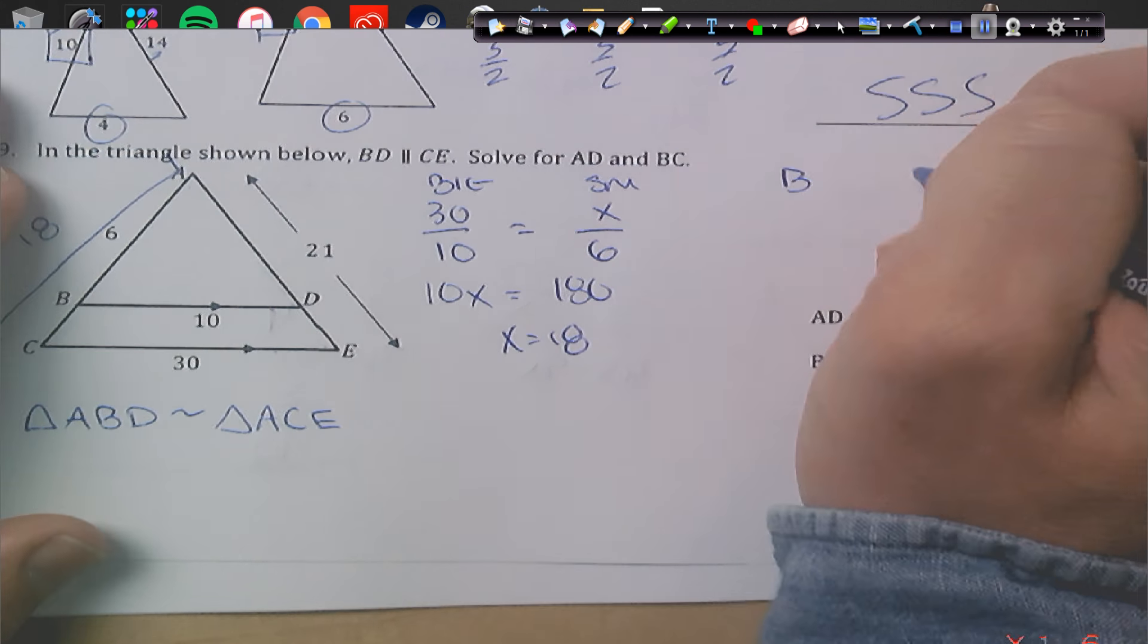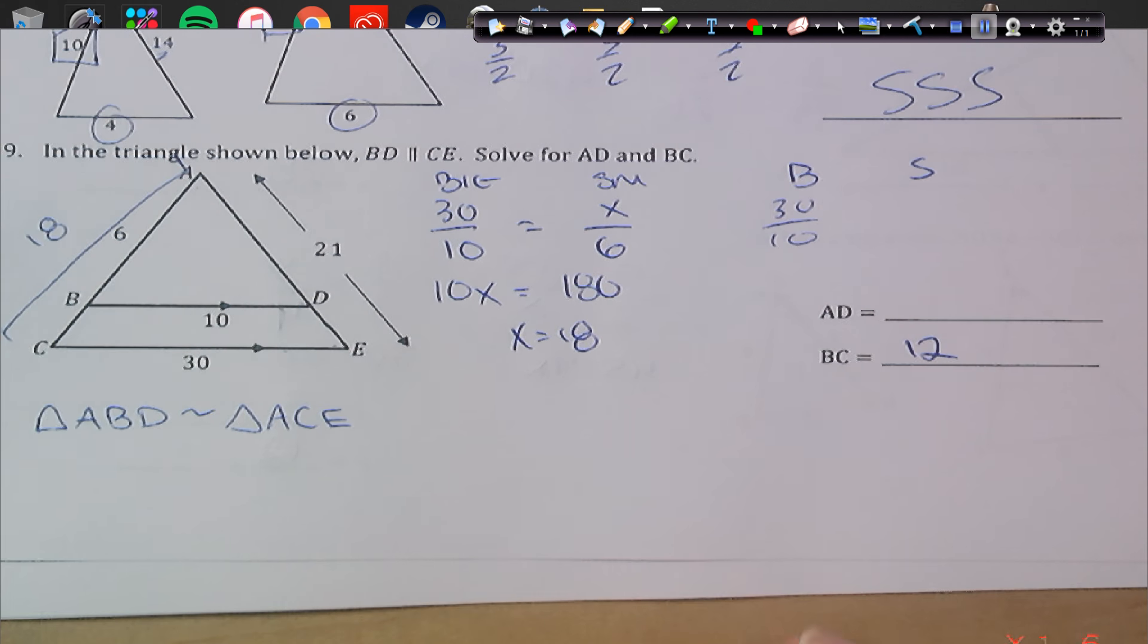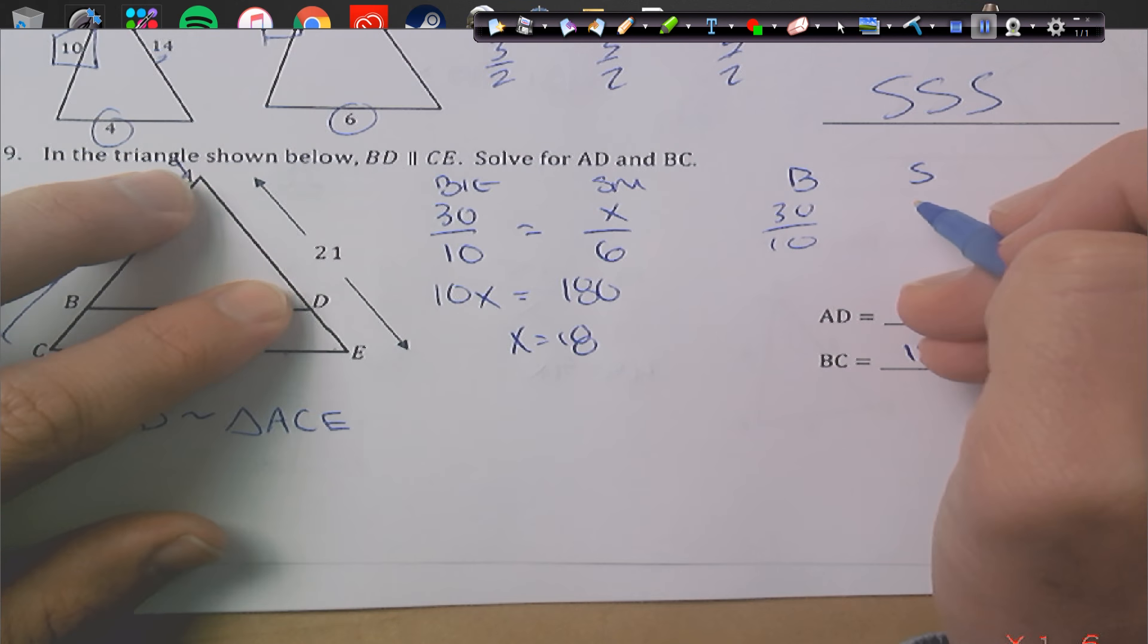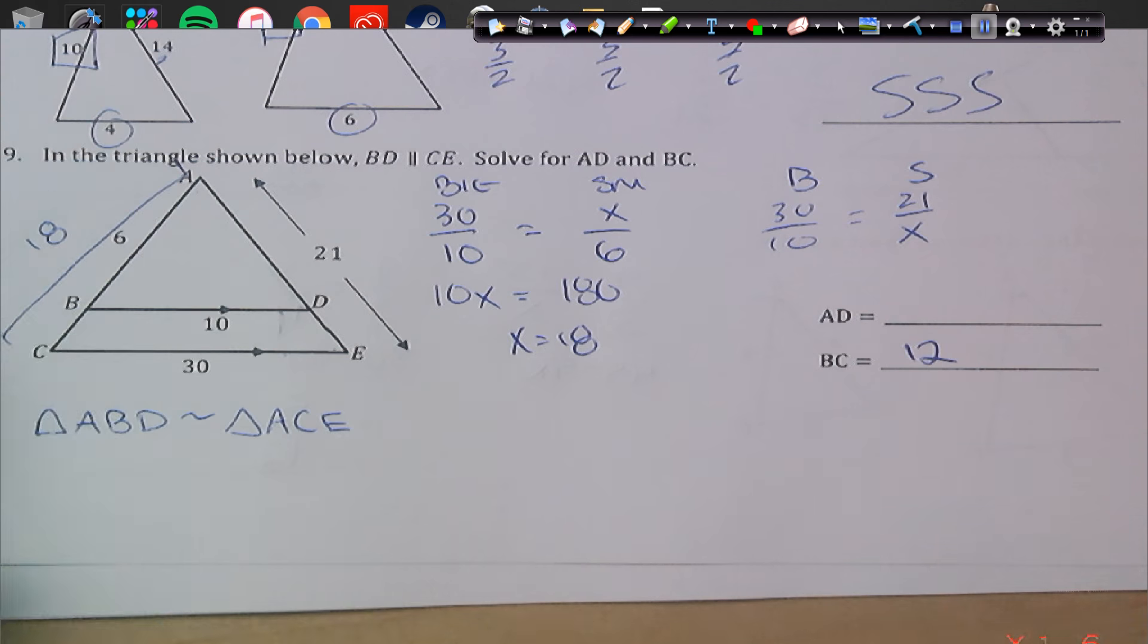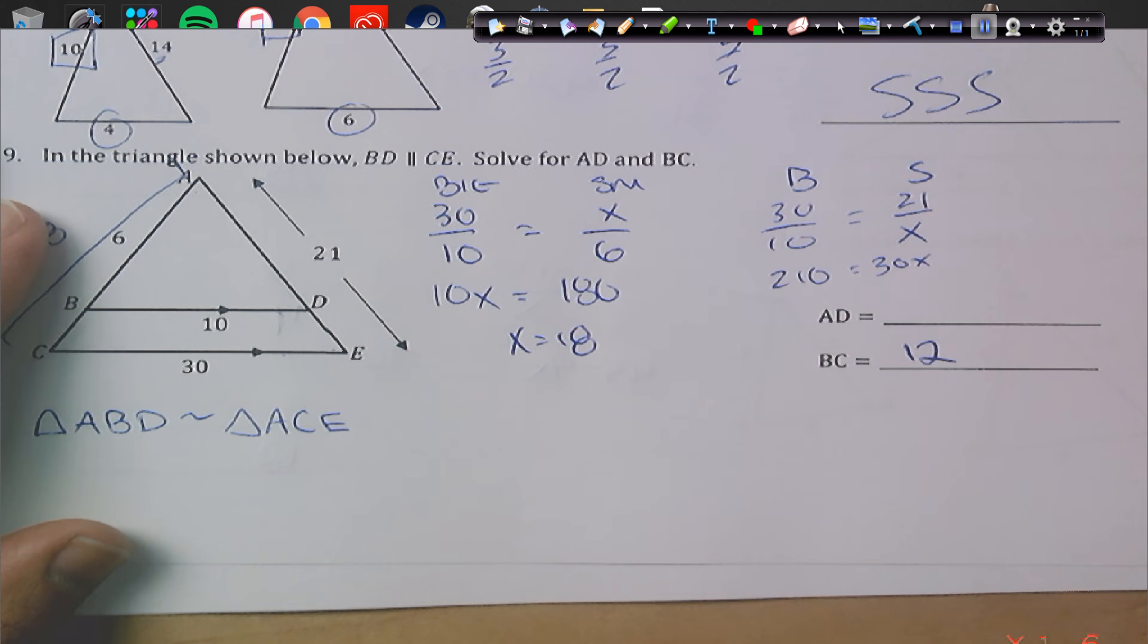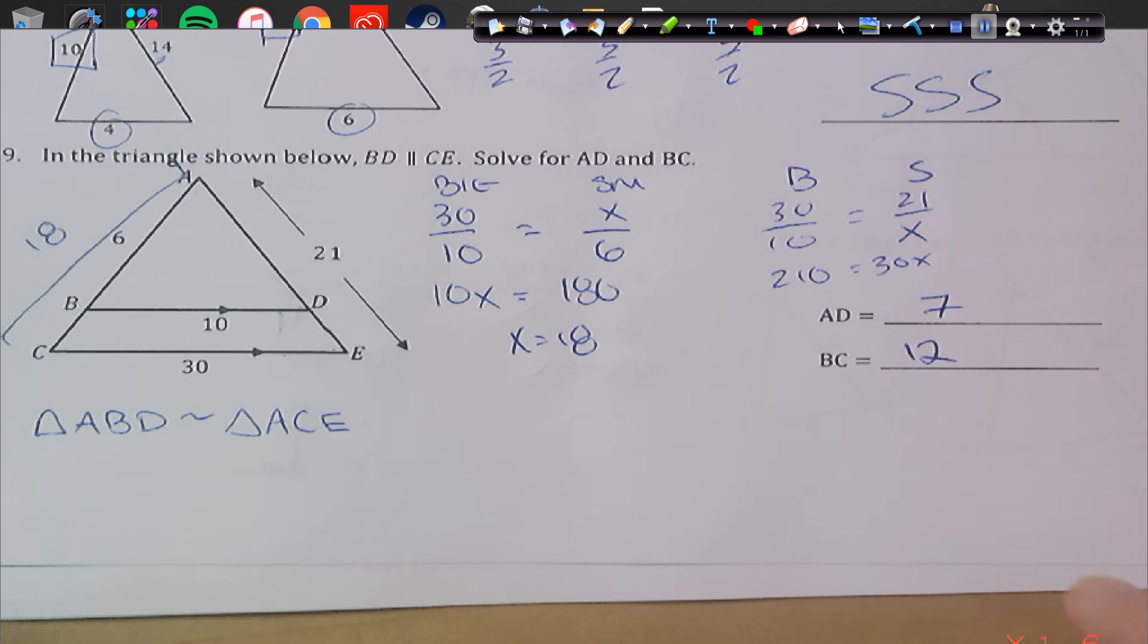Again, we can do that again. Big to small. 30 over 10. I'm going to still use that to assist me here. Now I'm looking for AD. Well, the big side is 21. AD, I don't know. We can cross multiply. So we get 210 equals 330. So we'll divide, and we get 7 for AD. Okay. And there you go. That's how we do it.